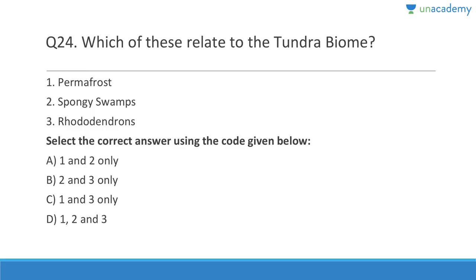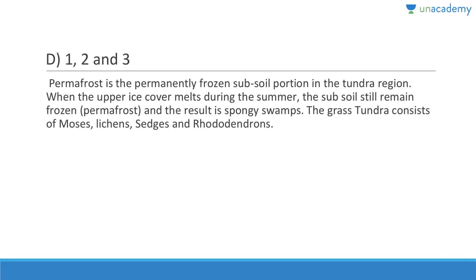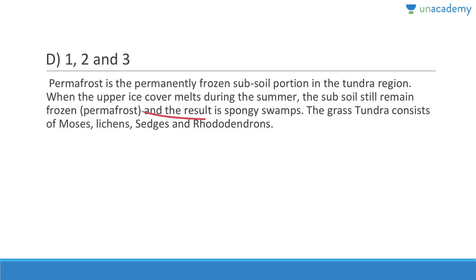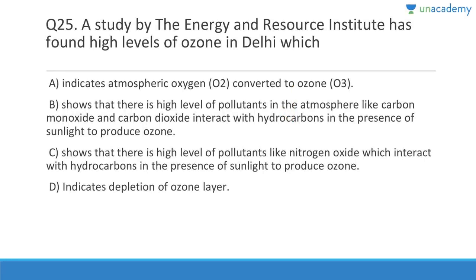Question 24: Which of these relate to the tundra biome — permafrost, spongy swamps, rhododendrons? Answer is D, 1, 2, and 3. Permafrost is the permanently frozen subsoil in tundra regions. When the upper ice cover melts during summer the subsoil still remains frozen year-round, resulting in spongy swamps. The grass tundra consists of mosses and plants such as rhododendrons.